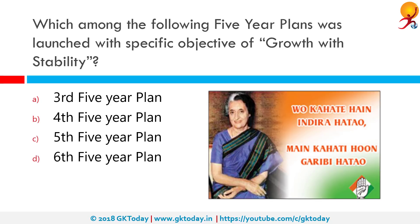Which among the following five-year plans was launched with the specific objective of growth with stability? The correct answer is the Fourth Five-Year Plan. It was the first plan launched by the Indira Gandhi government amid pressure of drought, devaluation, and inflationary recession. Its duration was from 1969 to 1974.